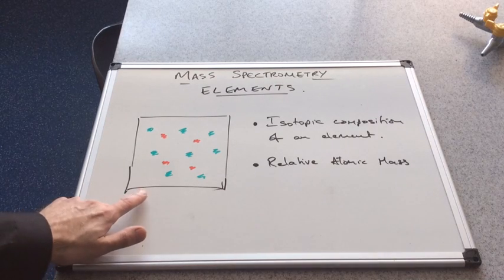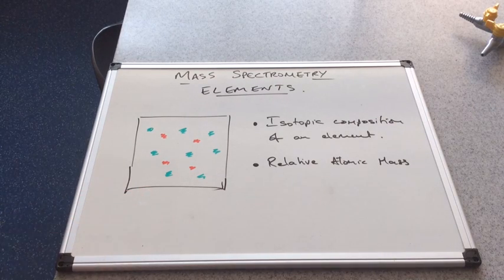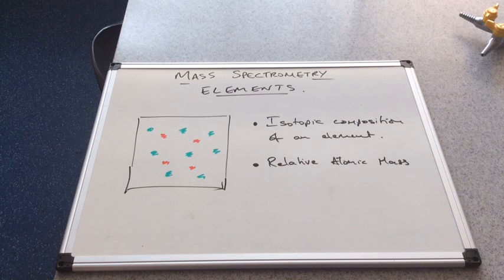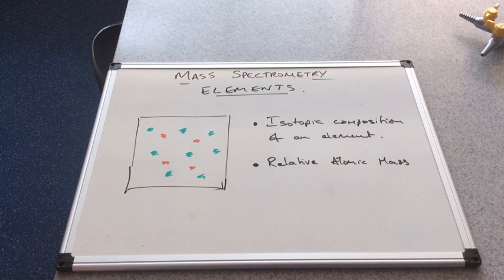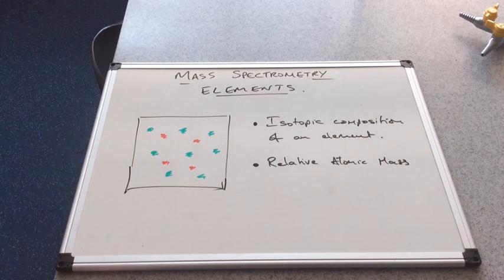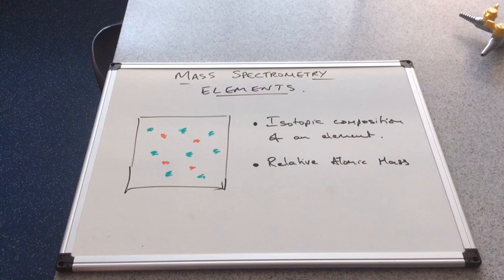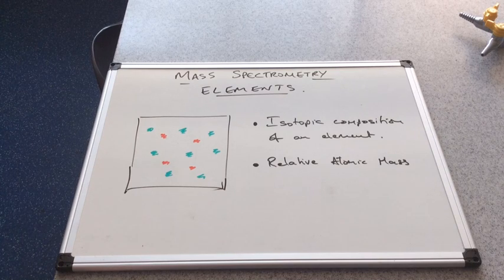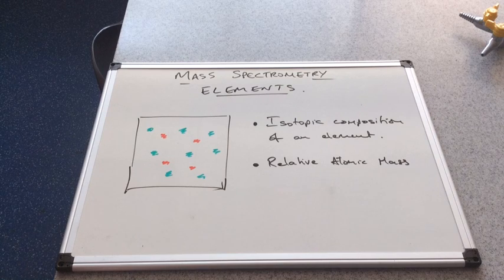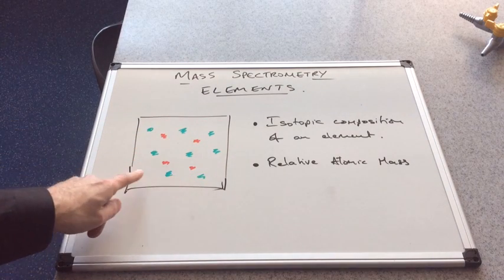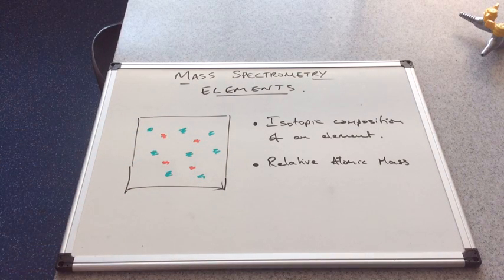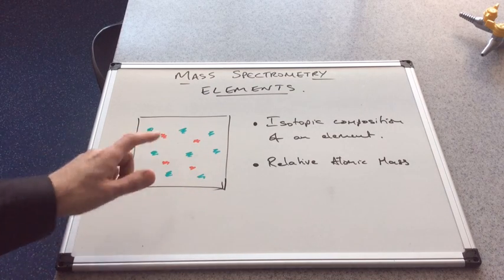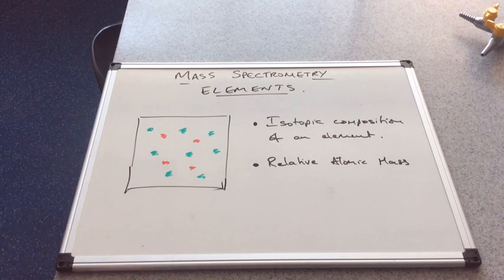In the box here, I've got a very simplistic representation of an element. We know that elements are composed of isotopes, so they are atoms of the same element with the same number of protons but different numbers of neutrons. That makes their masses slightly different. I've got two isotopes in this box, the green one and the red one.